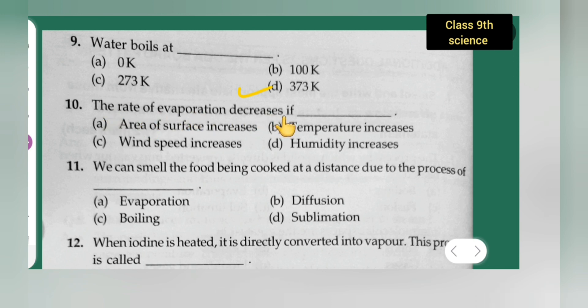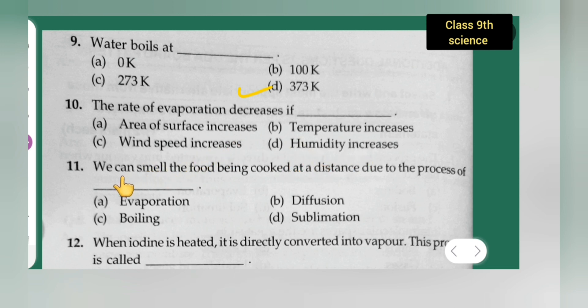Question 10: The rate of evaporation decreases if — option A is area of surface increases, option B is temperature increases, option C is wind speed increases, option D is humidity increases. The correct answer is humidity increases — option D.